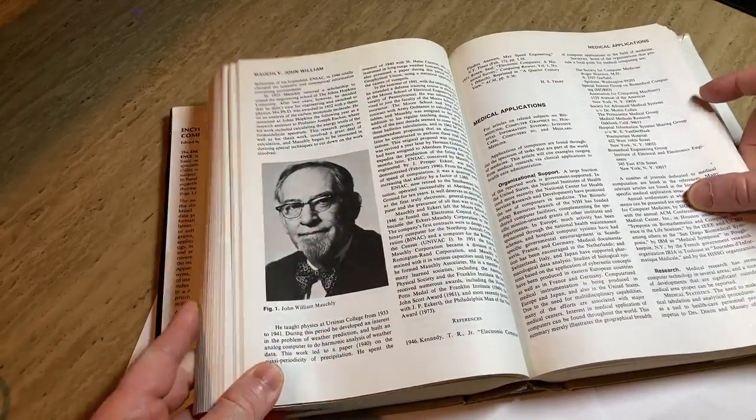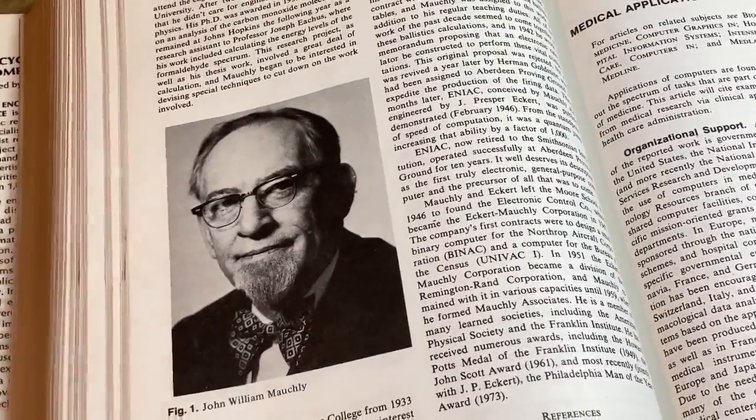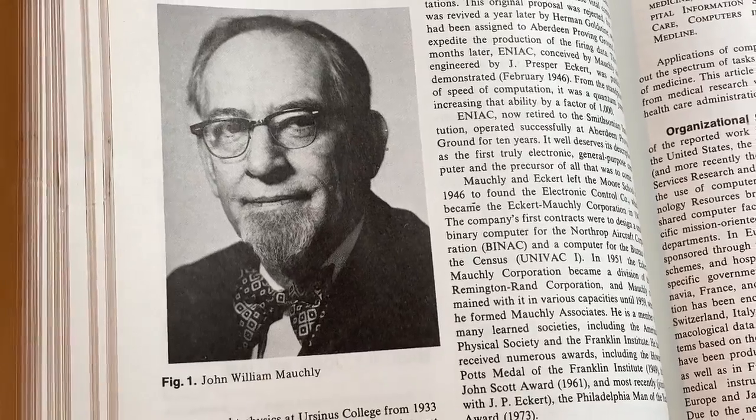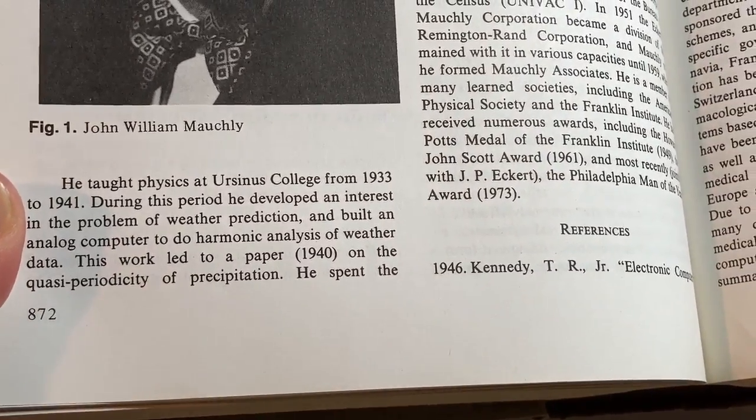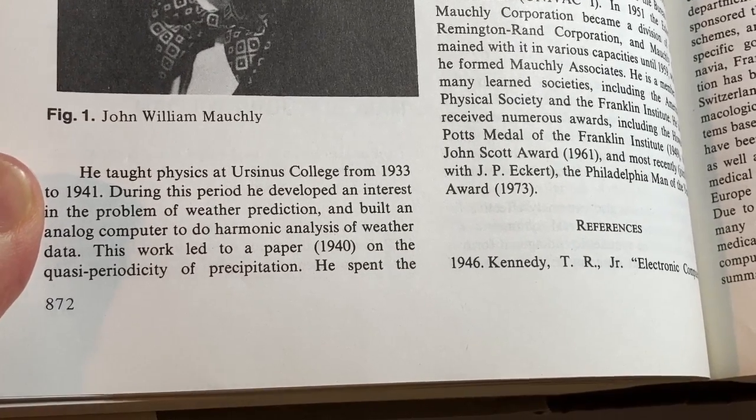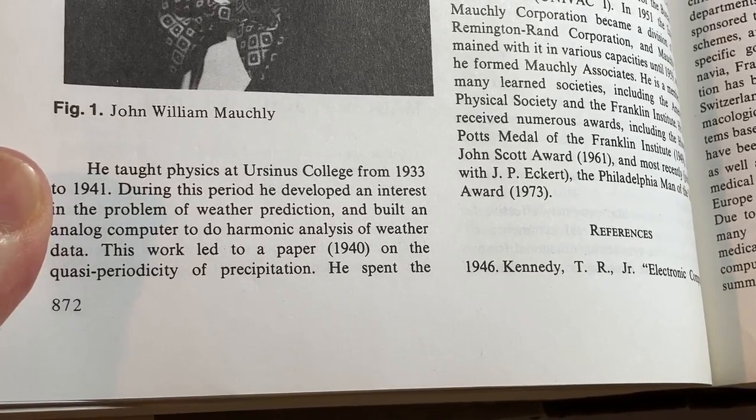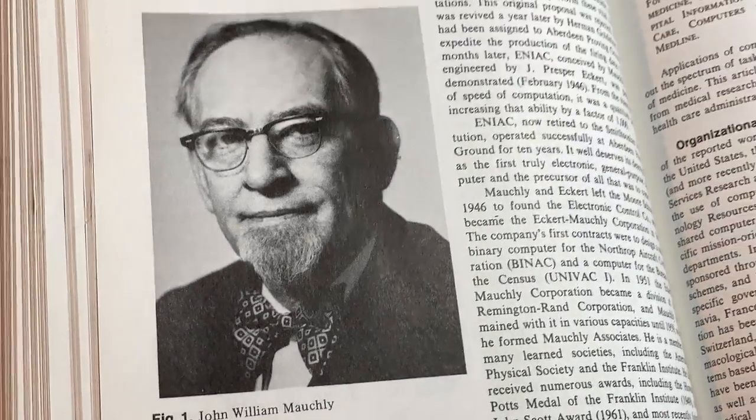Let's just randomly peruse through this book and see what we find. Well, here's something interesting. I love how it has pictures of people. Encyclopedia of Computer Science. John William Motchley. He taught physics at Ursinus College from 1933 to 1941. During this period, he developed an interest in the problem of weather prediction and built an analog computer to do harmonic analysis of weather data. Interesting guy, right?